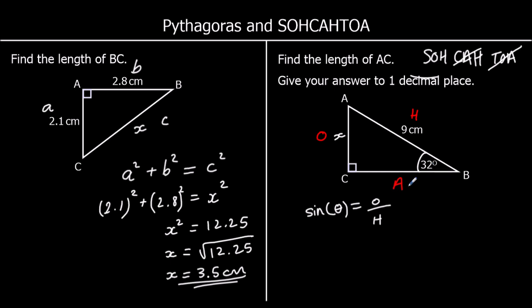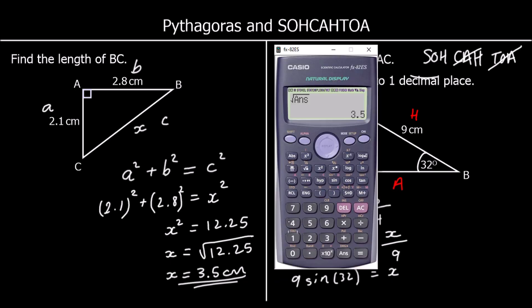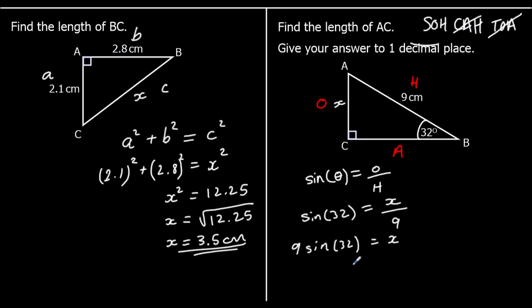So in this question the angle is 32, giving us sin 32 = x ÷ 9. To get x by itself, multiply both sides by 9, so x = 9 × sin 32. Typing that into the calculator, x is 4.8 centimetres to one decimal place.